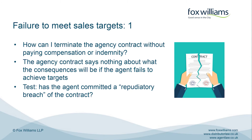In the first scenario, we look at a situation where the agent has failed to achieve sales targets, but the agency contract doesn't address what the consequences of that are. In these situations, principals will often come to us and say: can I terminate the agency contract and avoid paying compensation or indemnity as a result of the agent's failure to hit the target that we agreed on or that was imposed on the agent?